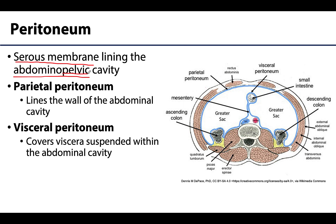Similar to what we had with the pleura of the thoracic cavity, there's going to be a parietal and a visceral peritoneum. Parietal peritoneum is attached to the muscular layers of the abdominal wall, so it's going to line the walls of the abdominal cavity, and it's going to be connected by extraperitoneal connective tissue — which we talked about a little when we discussed the anterior abdominal wall.